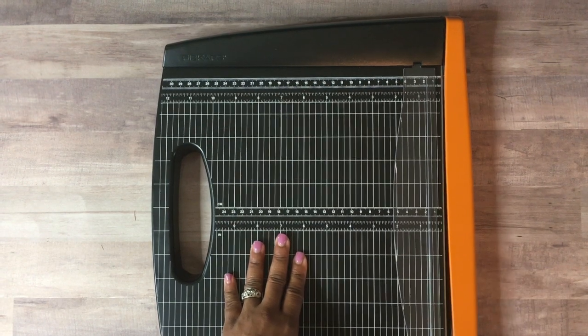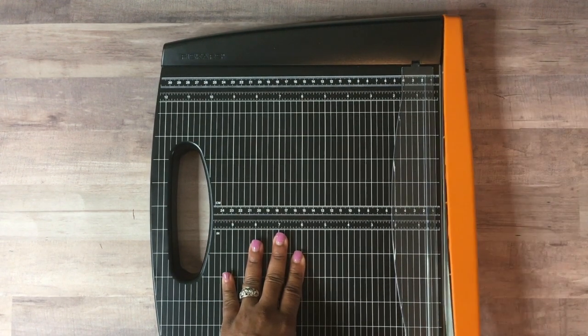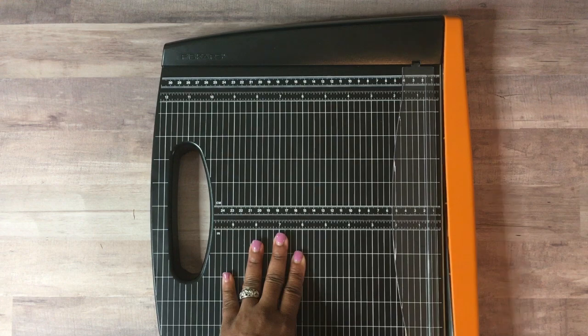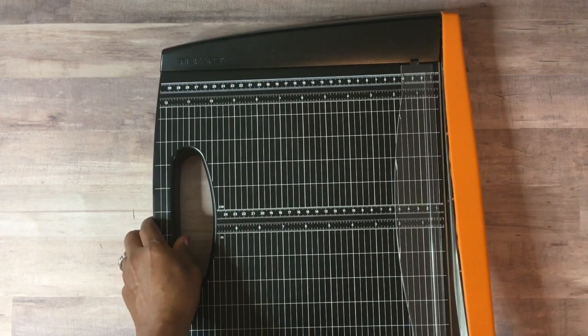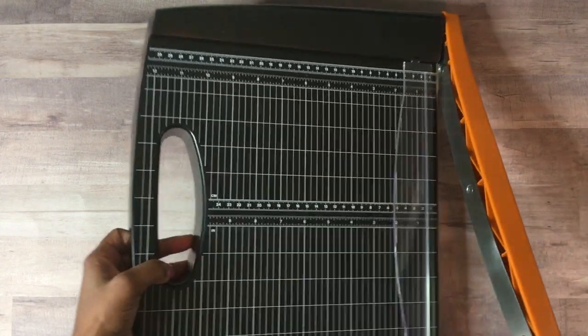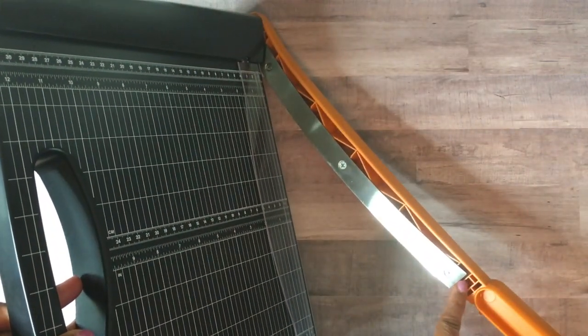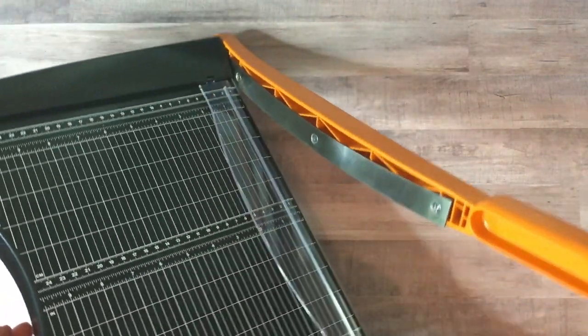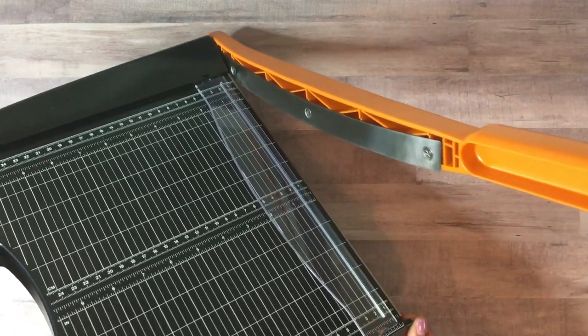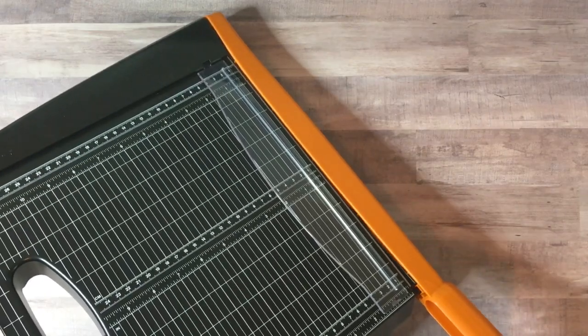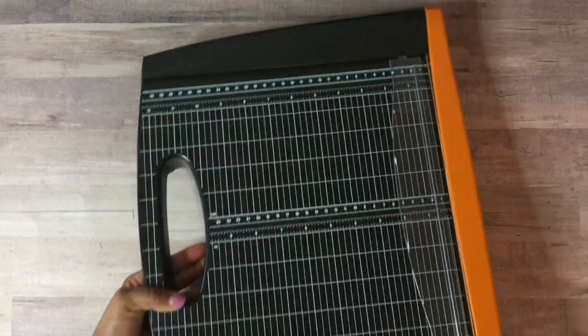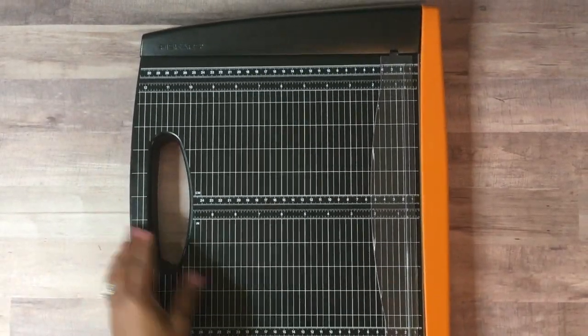So you have the handle here, and then they have the lock mechanism here. What you're going to do is pull the handle out a little bit. You can see this little opening right here and then this black little protruding part. You're going to pull this out a little bit and make sure it goes right into that. That is the locking mechanism.